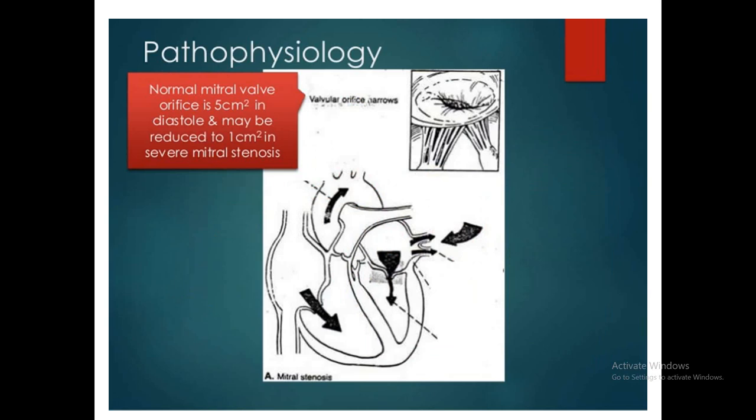The normal mitral valve diameter is 5 cm. At 4 cm or 3 cm, there is no problem. But if it is less than 1.5 cm, symptoms will appear. If less than 1 cm, symptoms will definitely be more severe. And less than 0.5 cm is a severe problem for the patient, and survival is very, very difficult.